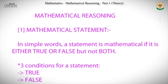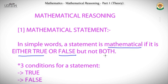Sure. Going to the very basics, let's see what a mathematical statement exactly is. In simple words, a statement is mathematical if it is either true or false but not both. So basically a statement should be true or false but not both — a statement cannot be true and false at the same time. That is called a paradox.